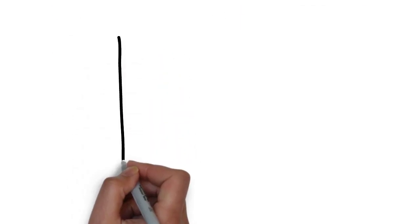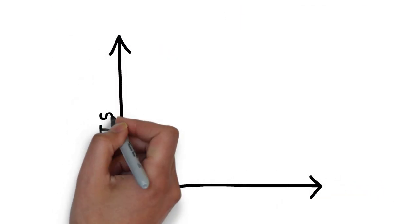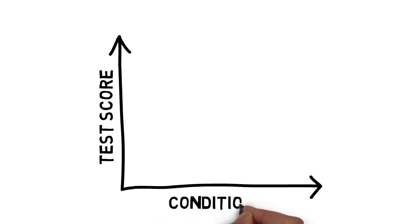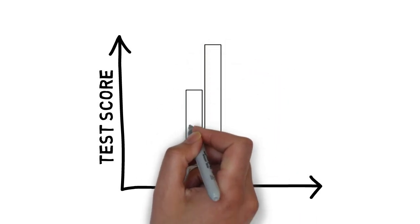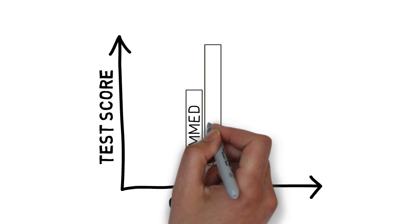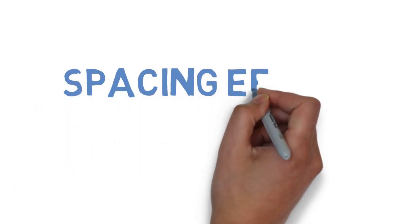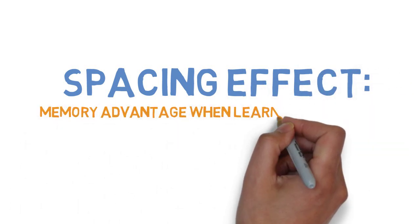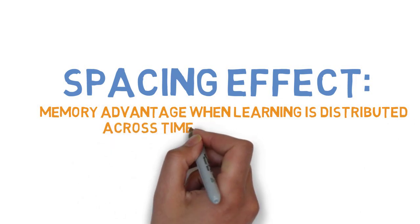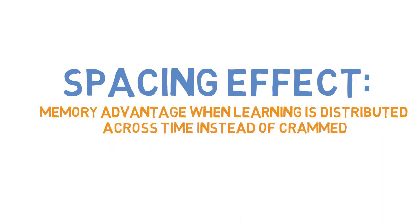Five weeks following the second learning session, the students were tested on the recall of the words. The group that spaced their learning with a one-week break showed superior long-term retention on the test. This study demonstrates one effective strategy called the spacing effect. This is the memory advantage that occurs when learning is distributed across time instead of crammed.